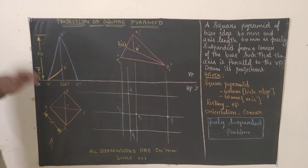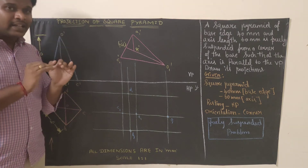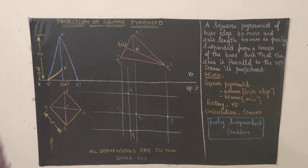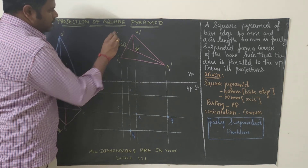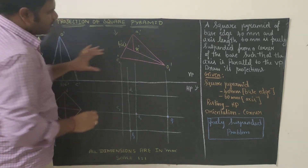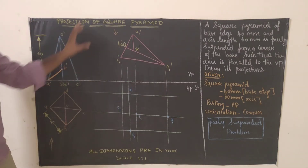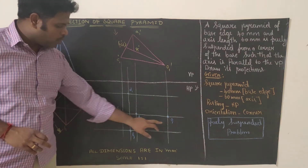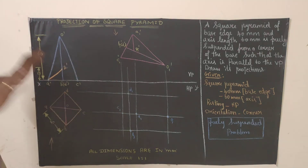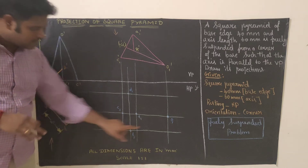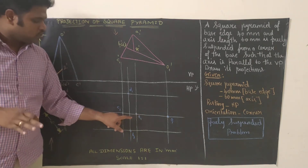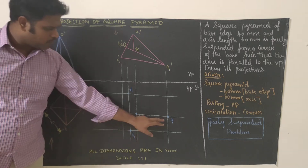Identify which point lies nearest to the reference line — O1-dash is nearest. Whichever edge connects to O1 will be checked for visibility. When you look from the front, you cannot see O1 to C1, so O1-C1 is hidden. However, O1 to A1 is a visible edge — and since the visible edge overlaps the hidden one, only A1 to C1 remains marked as hidden. O1-C1 is hidden, but because O1-A1 is visible, the hidden line is effectively covered; only A1-C1 is marked as hidden.